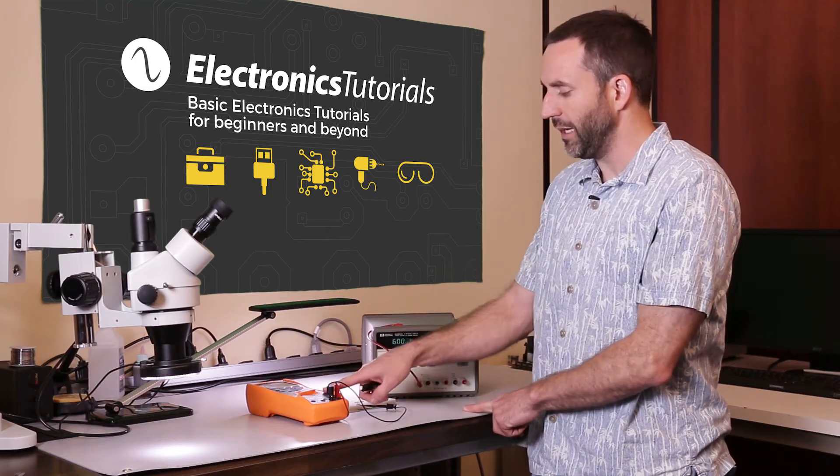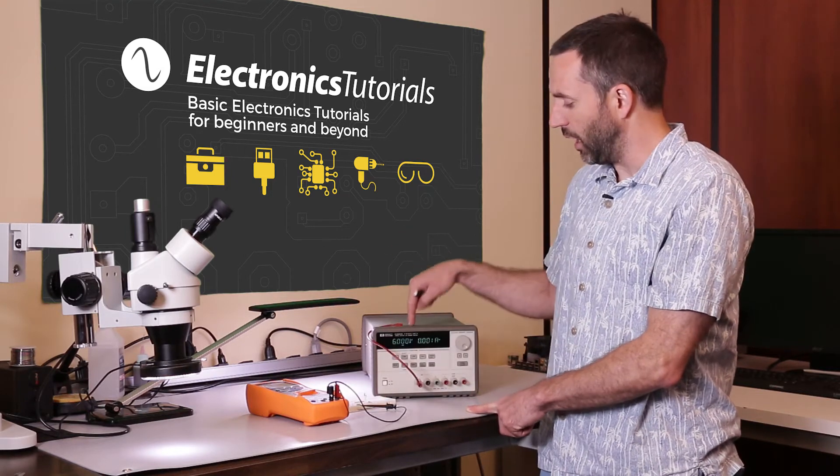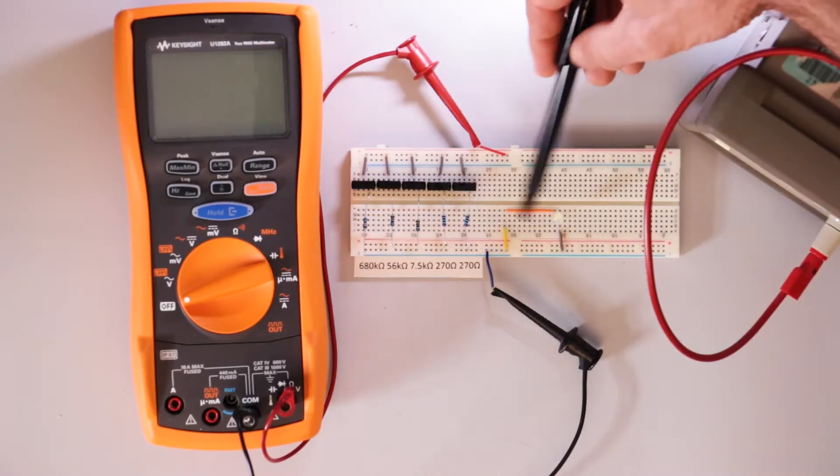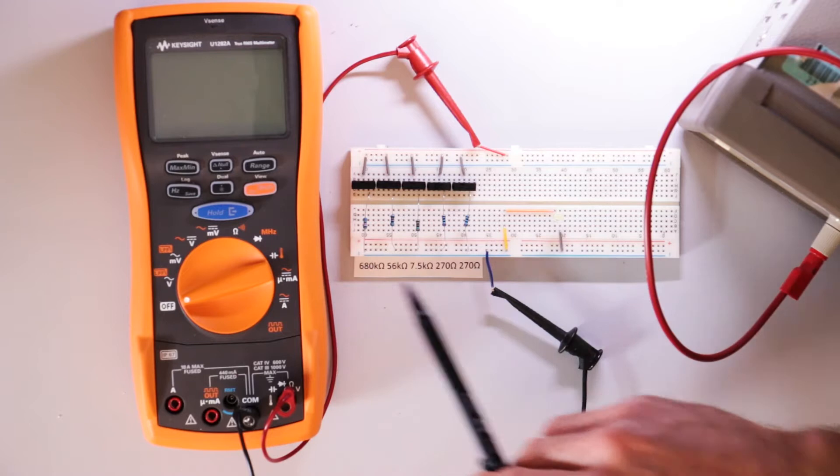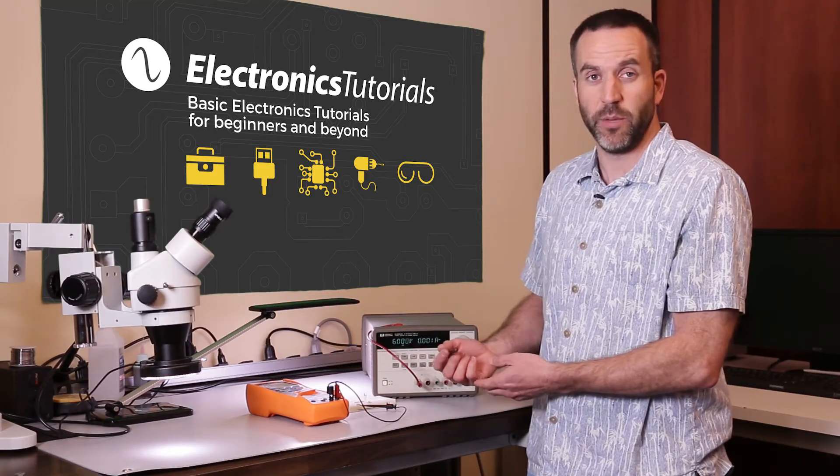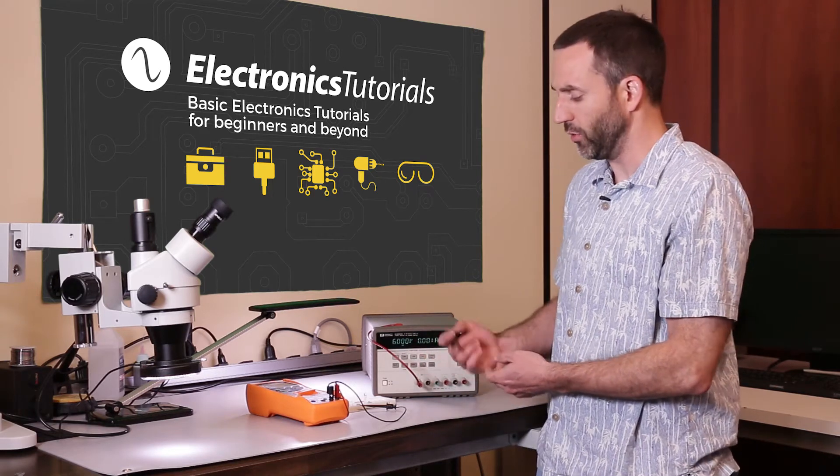I'll also be using the DMM to measure the current. I have a power supply here and I'm going to light up an LED, which is here, and vary the resistance, the current limiting resistor going to that LED. You can see how the brightness changes depending on the total resistance.